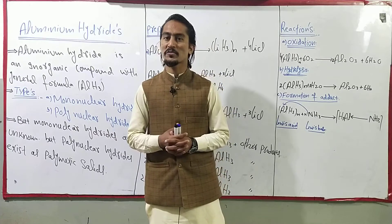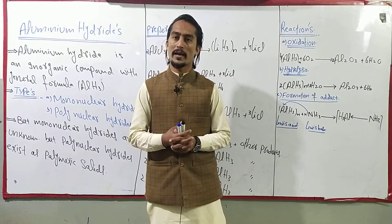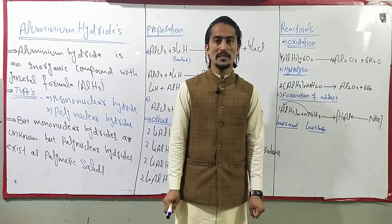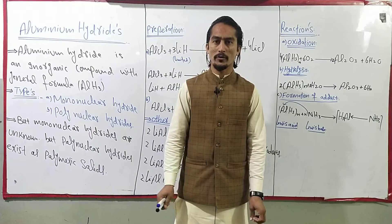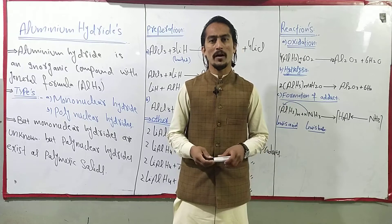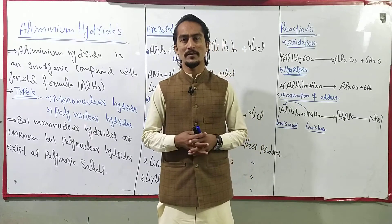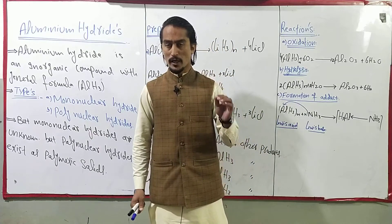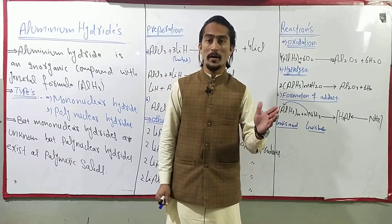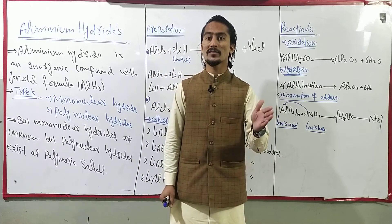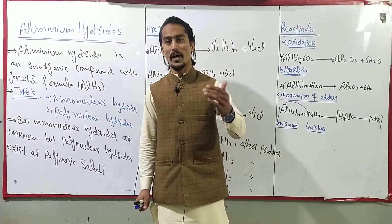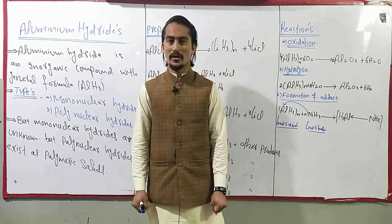Today we are going to start aluminium hydrides. Aluminium hydrides are basically compounds of hydrogen with aluminium. If aluminium forms a compound with hydrogen, it is known as an aluminium hydride. Those compounds of aluminium with hydrogen are called aluminium hydrides.